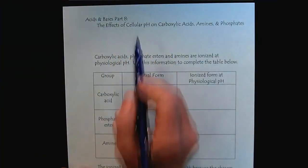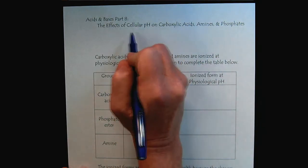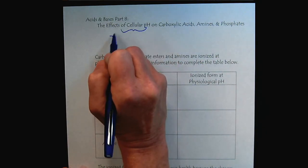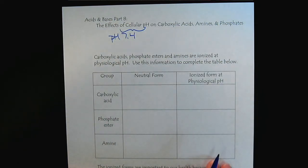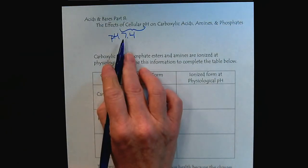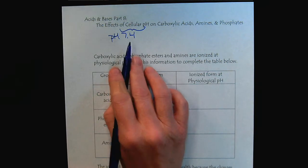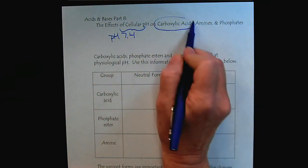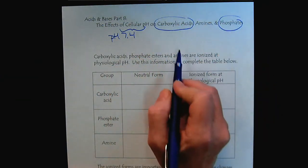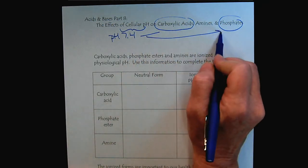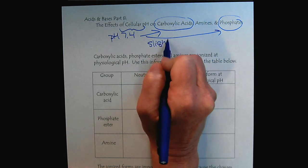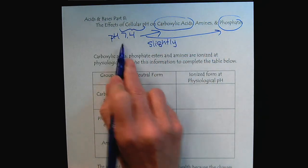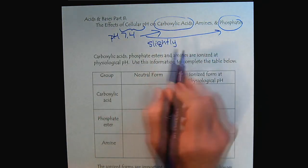Cellular pH is going to be pH 7.4. So this pH is slightly basic. This pH creates a slightly basic environment.